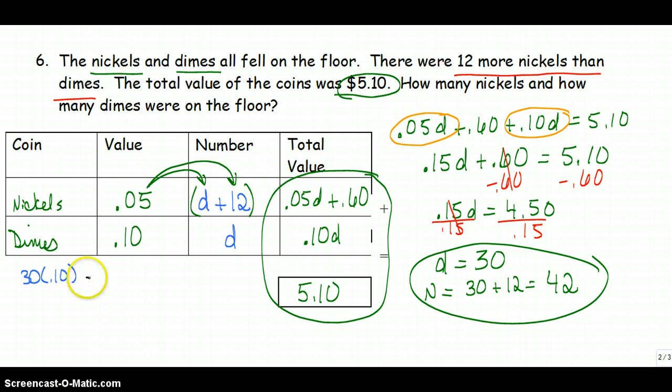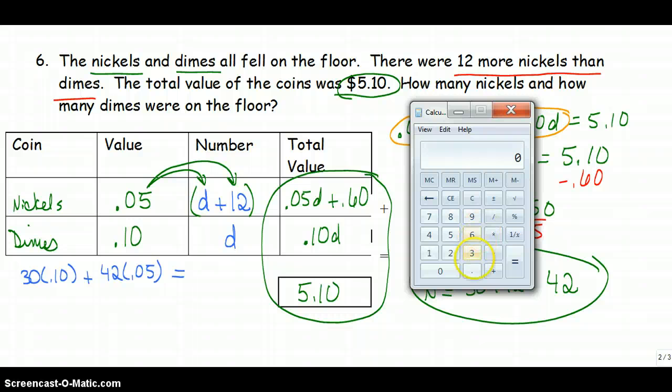We've got 30 times .10, the value of a dime, plus how many nickels I have, I've got 42 nickels, times .05, and I'm hoping that that equals $5.10. Okay, well, 30 times .10, that's $3.